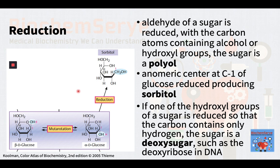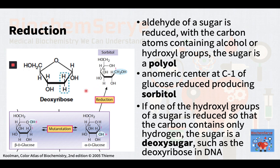If the aldehyde of a sugar is reduced, all of the carbon atoms contain alcohol or hydroxyl groups, and the sugar is a polyol. A good example is the reduction of the anomeric center at C1 of glucose, producing the sugar alcohol sorbitol. If one of the hydroxyl groups of a sugar is reduced so that the carbon contains only hydrogen, the sugar is a deoxysugar, such as the deoxyribose in DNA.